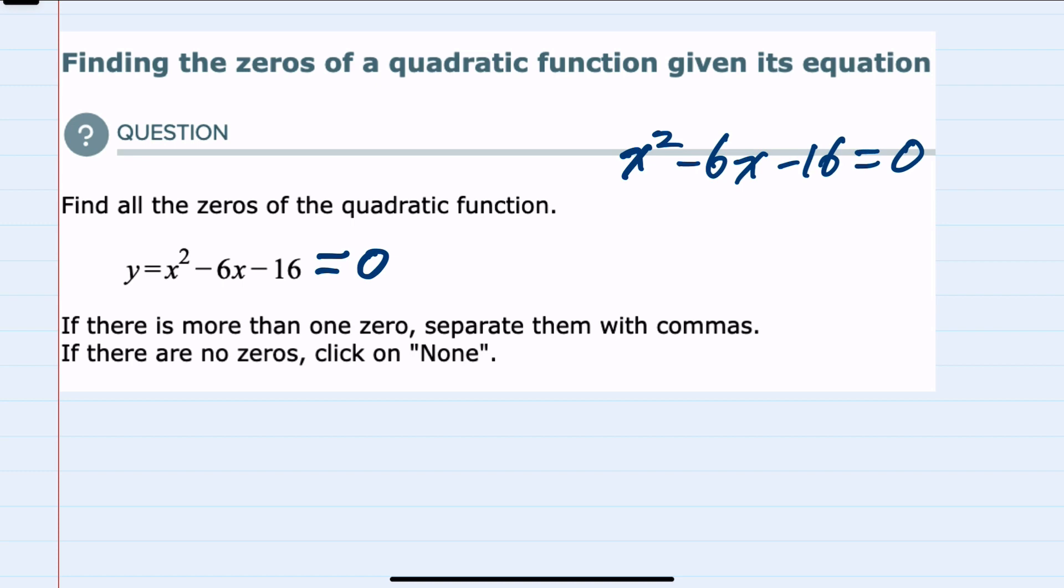To find the x values that would make this true, I can factor the left-hand side. And here since it's an x squared, I know it would have to be an x and an x.